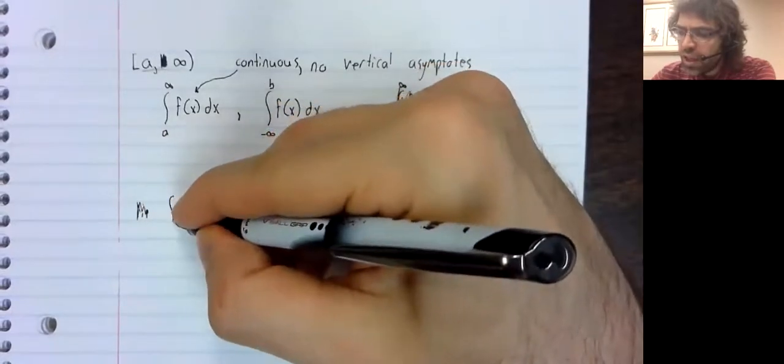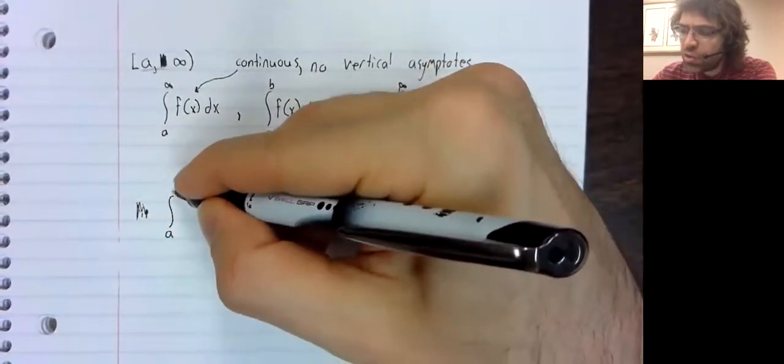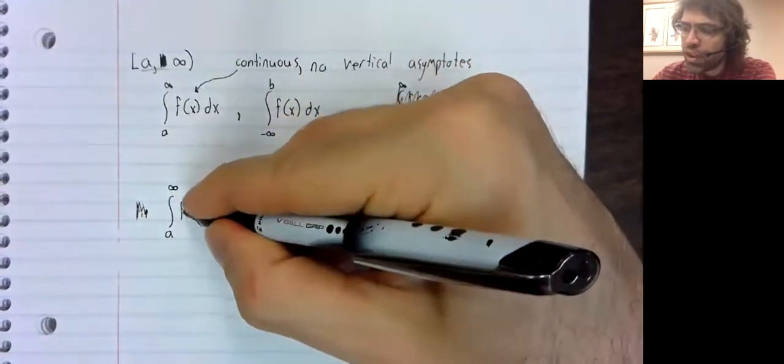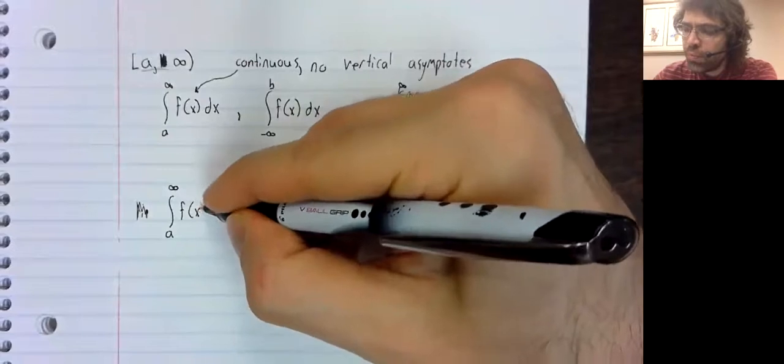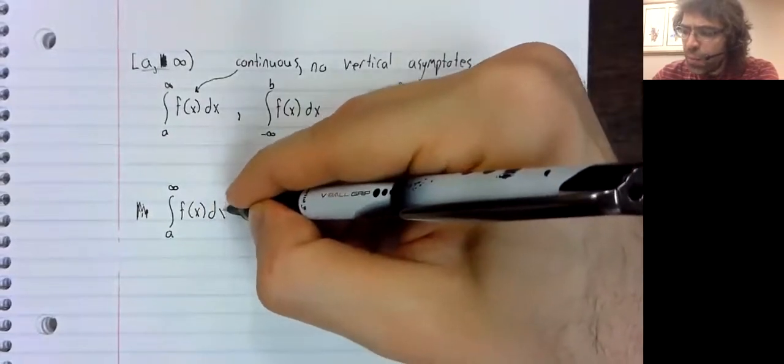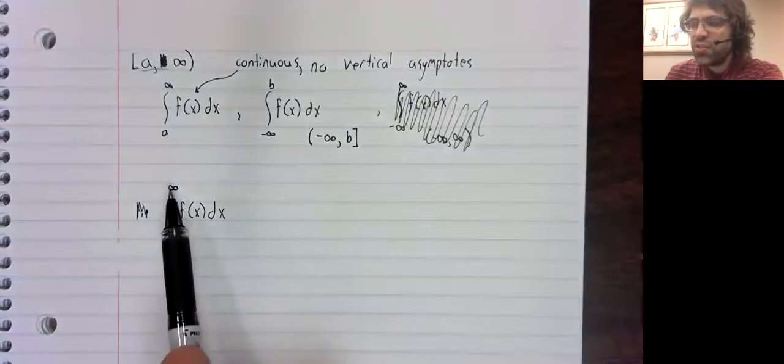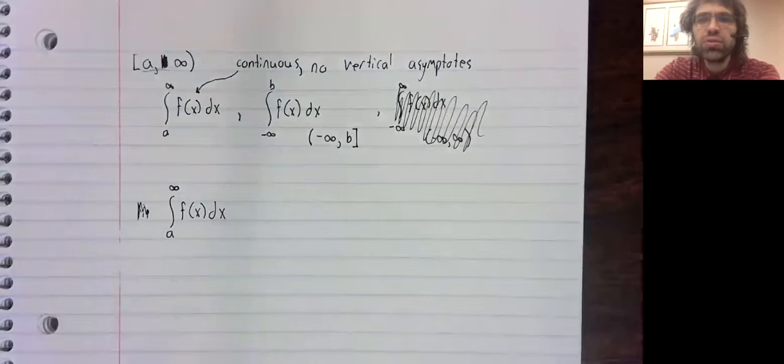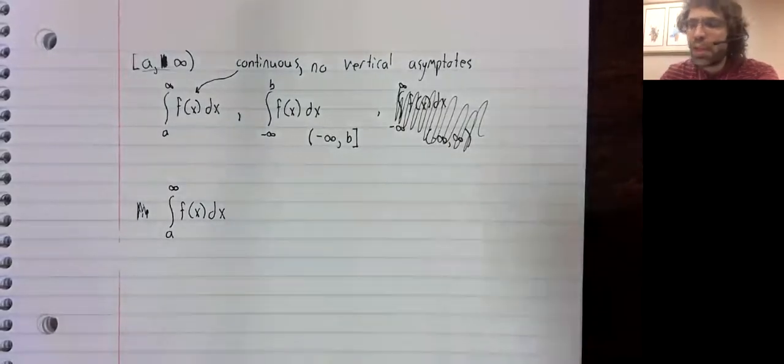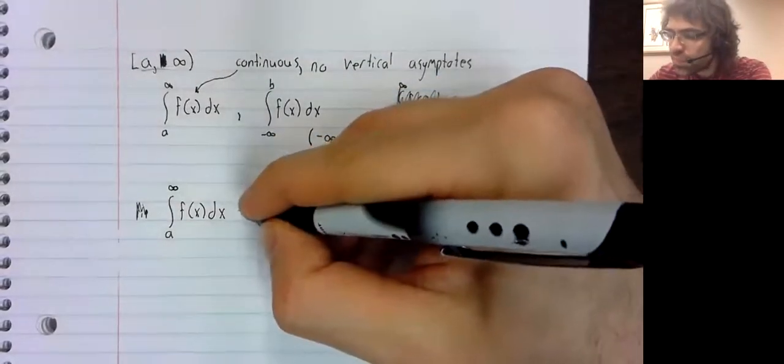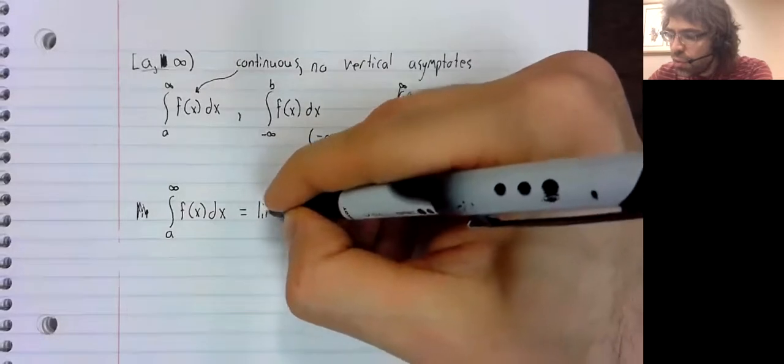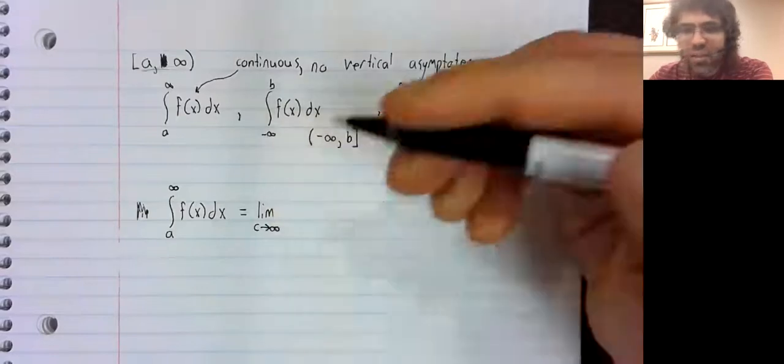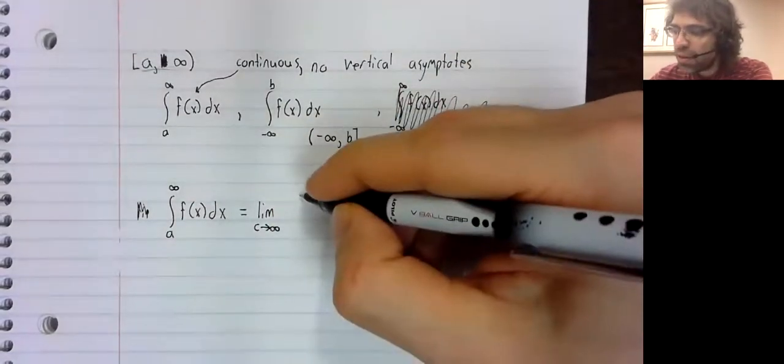And now that you've seen the first type of improper integral, where we replace one of the limits of integration with something else and take a limit, you may not be surprised at how we deal with these.